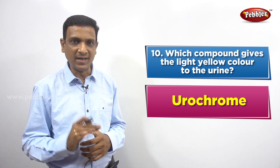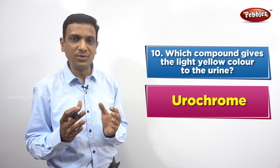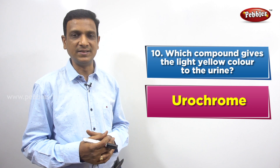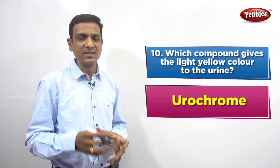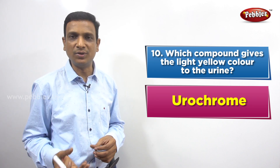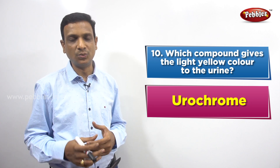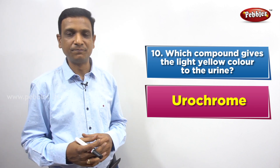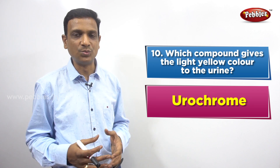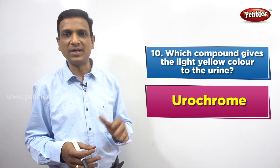So Urochrome comes from the destruction and breakdown of red blood cells and hemoglobin — that is the source of Urochrome. This Urochrome is filtered in the kidneys along with water and other wastes and minerals. It enters the urine and gives it the color. If a person drinks more water, their urine is more diluted and has a very pale color. When a person drinks less water, their urine is concentrated and has a darker yellow color due to more pigment. So Urochrome is the pigment that gives light yellow color to the urine.